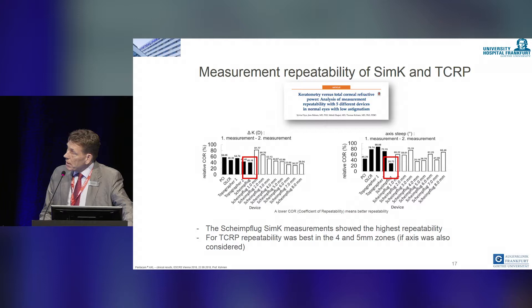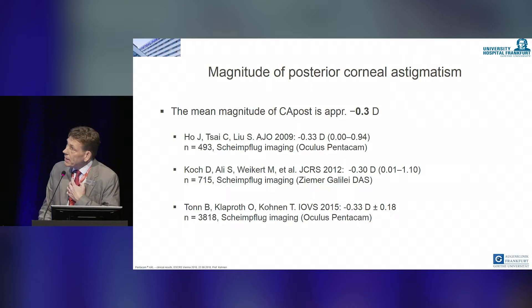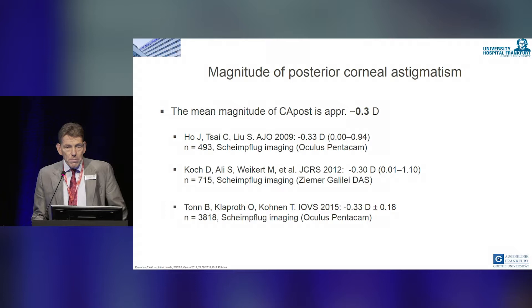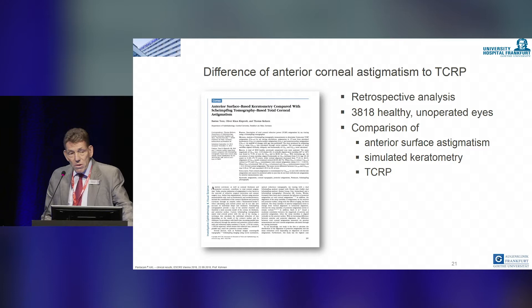The sources of errors in measurement are the crystalline lens, posterior cornea, and retina. Looking at three studies — the first by Ho in 2009, and also the Koch group's study, which we also conducted — we found the same amount of posterior measurement at 0.3 diopters negative. Here is our IOVS paper which highlighted this, based on 3,800 eyes, looking at all measurements in total corneal refractive power.